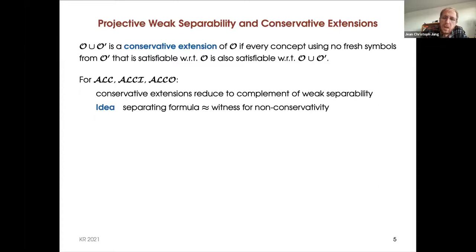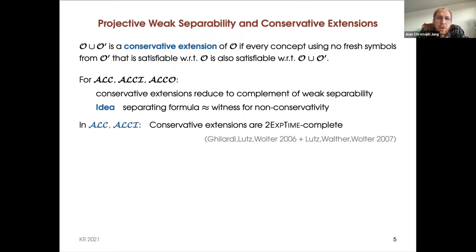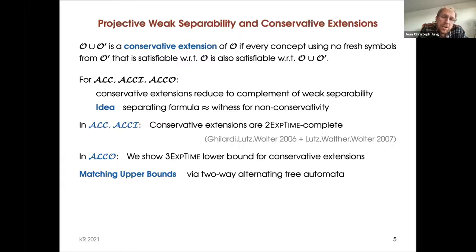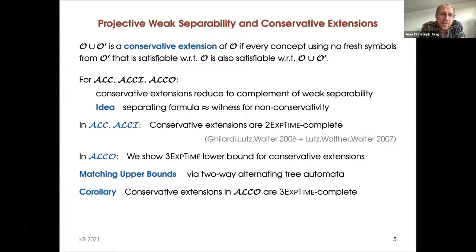In ALC and ALCI, conservative extensions are known to be 2-ExpTime-complete, so we get this as a lower bound for weak separability. For ALCO, the complexity was open and we show a triple-exponential lower bound for conservative extension. We also show matching upper bounds via a reduction to the emptiness problem of two-way alternating tree automata. As a corollary, we get that projective conservative extensions in ALCO are 3-ExpTime-complete.